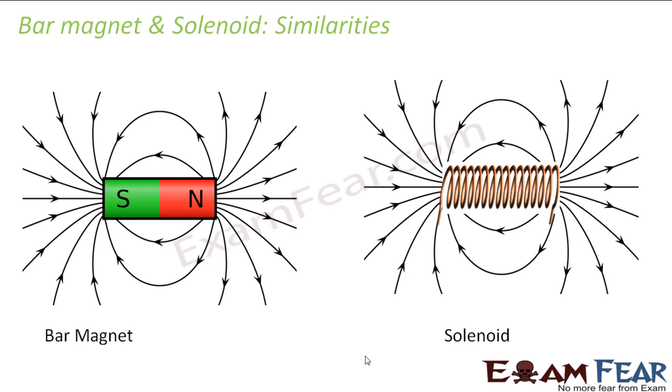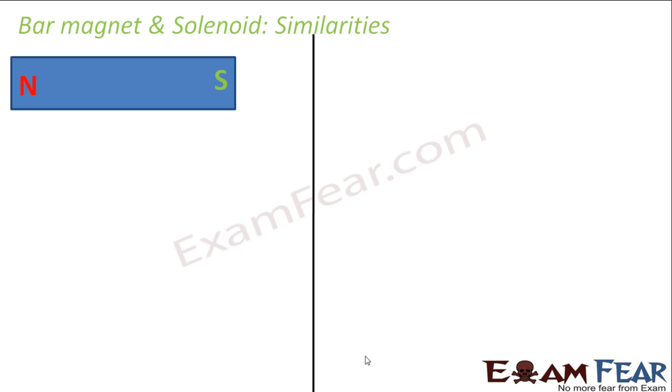The first point again would be the magnetic field lines. The magnetic field lines are exactly similar for a bar magnet as well as a solenoid.